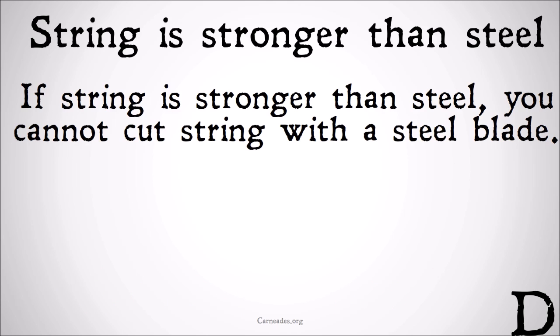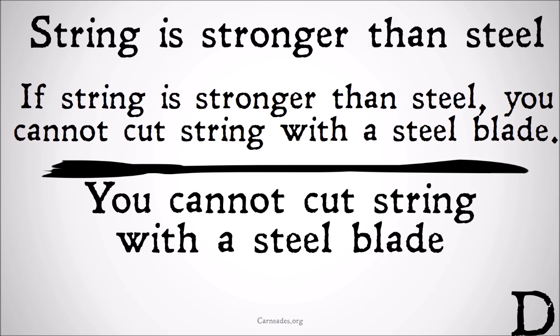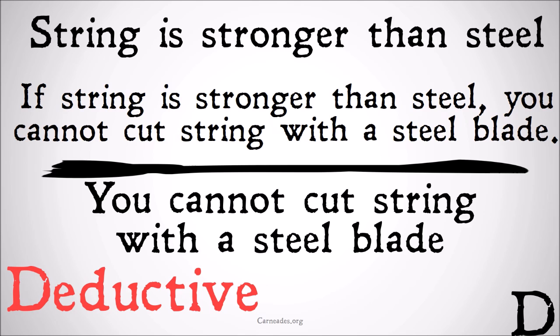Next argument: 'String is stronger than steel. If string is stronger than steel, you cannot cut string with a steel blade. Therefore, you cannot cut string with a steel blade.' This is, once again, a deductive argument. The premises are attempting to show the truth of the conclusion, and it is a valid argument — if the premises are true, we can do a basic modus ponens and show that the conclusion is true as well. It's interesting, because it's also an unsound argument, because the premises are actually false, at least in this world. String is not stronger than steel, so it would fail that test, but it's still a valid argument. You don't have to have true premises for an argument to be valid.